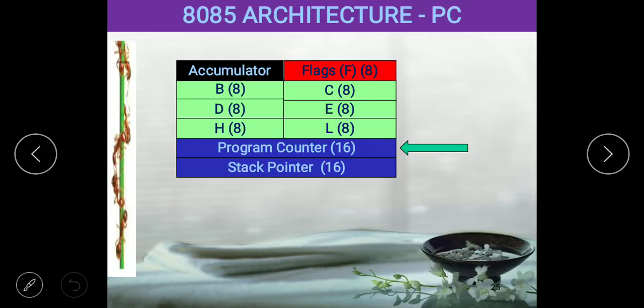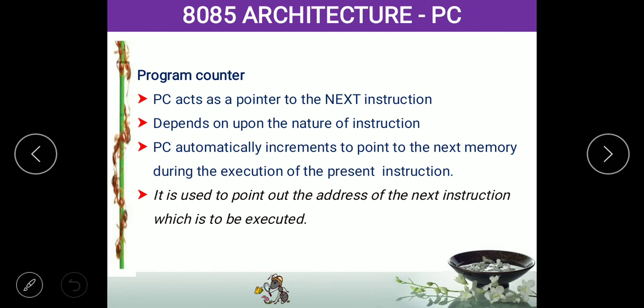The next element is the program counter. What is a program counter? As the name implies, it counts the number of lines executed in the program, or tells the processor which lines are to be executed. Suppose you are writing a 10-line C program — those instructions can be stored anywhere in memory, and the processor will not know where they are stored. The program counter tells the processor where the instructions are stored and in what sequence they must be executed.